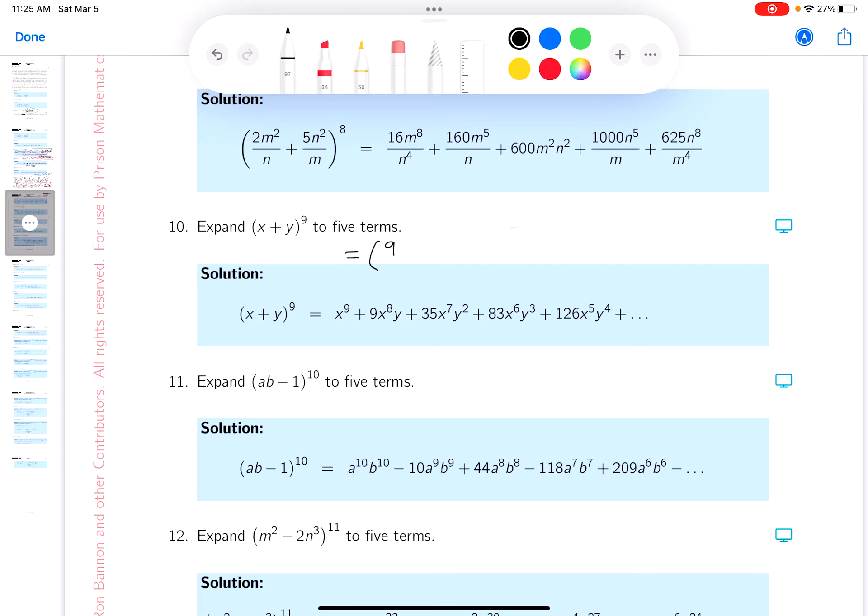So I'm going to say 9 choose 9, x to the 9. Then I'm going to say 9 choose 8, x to the 8, y. Then I'm going to put down 9 choose 7, x to the 7, y squared.